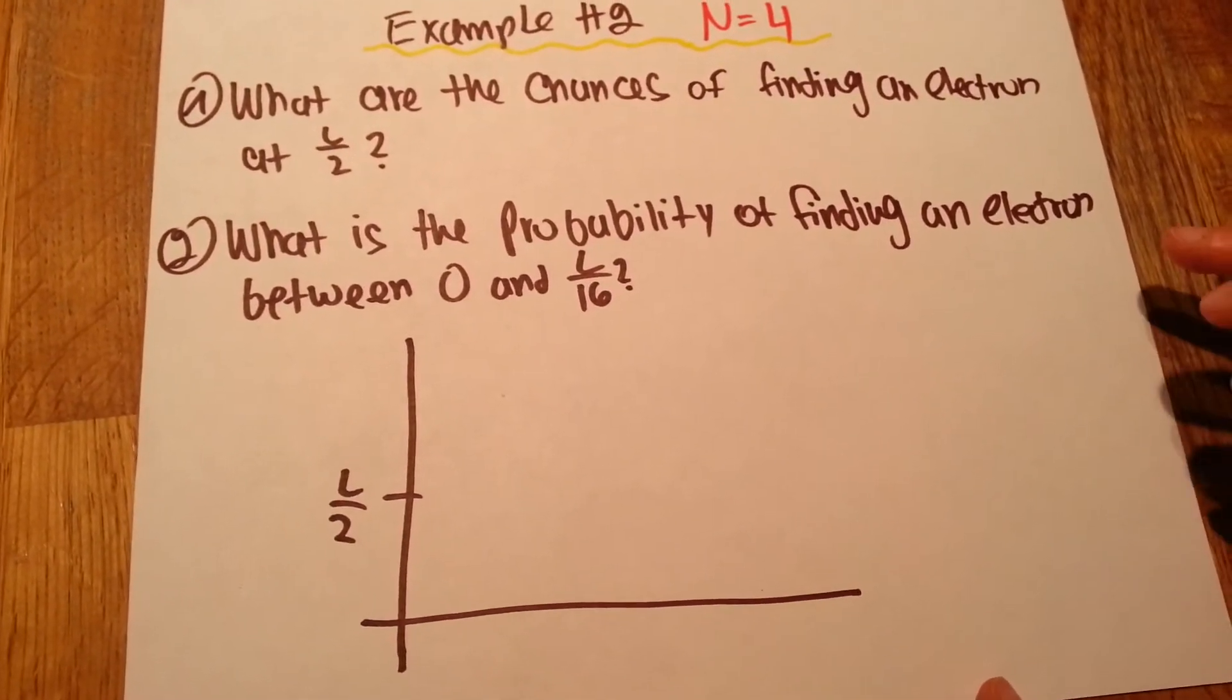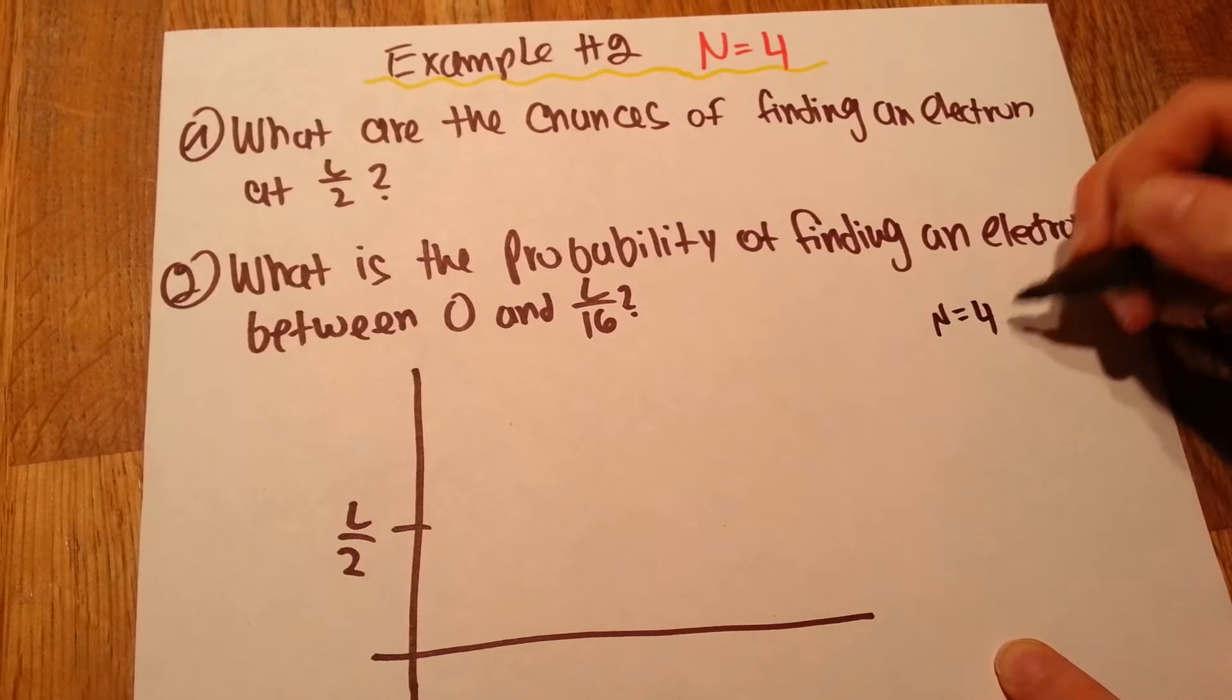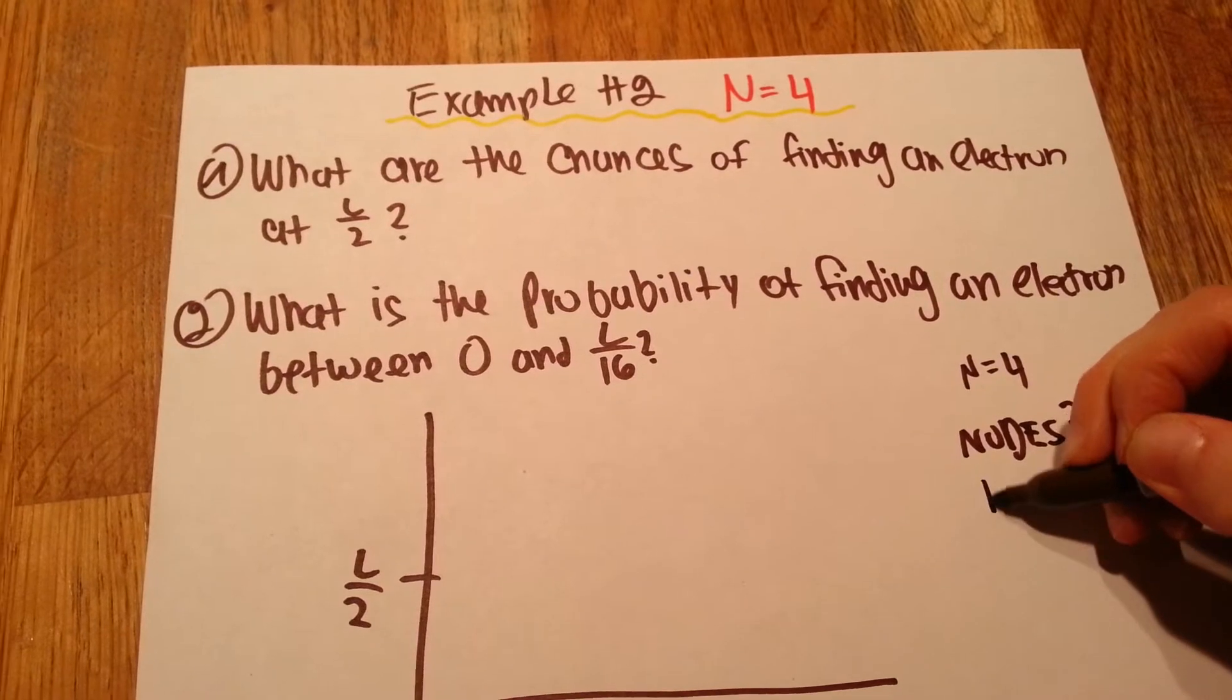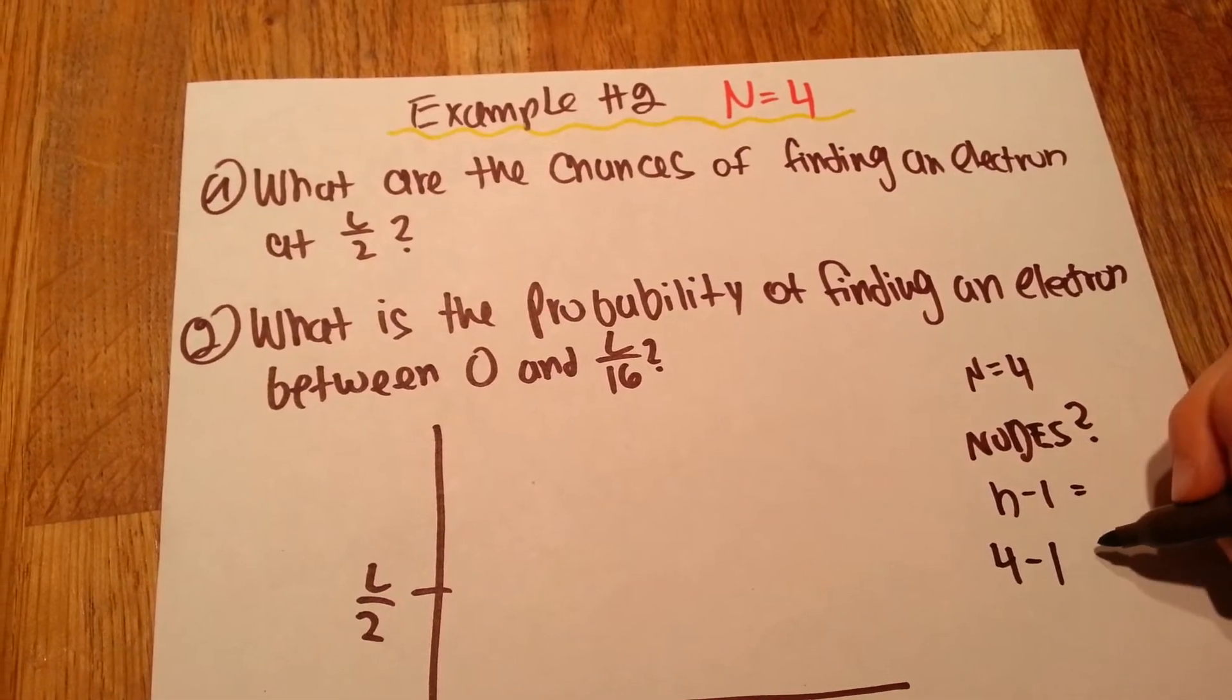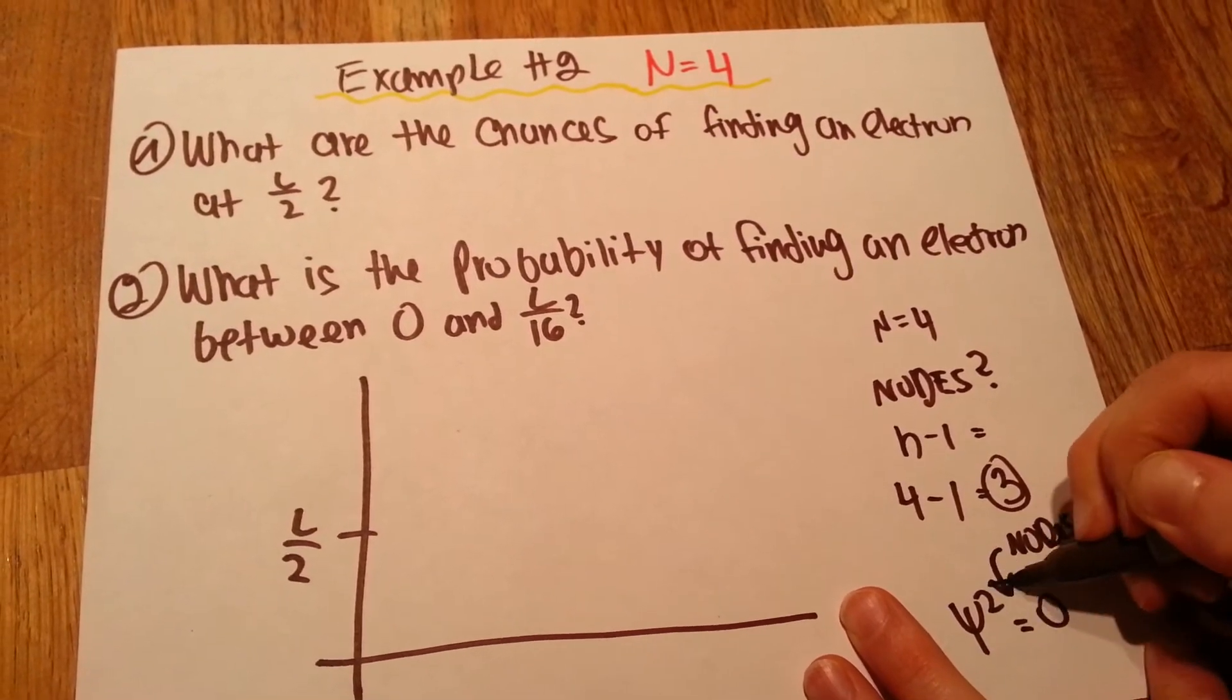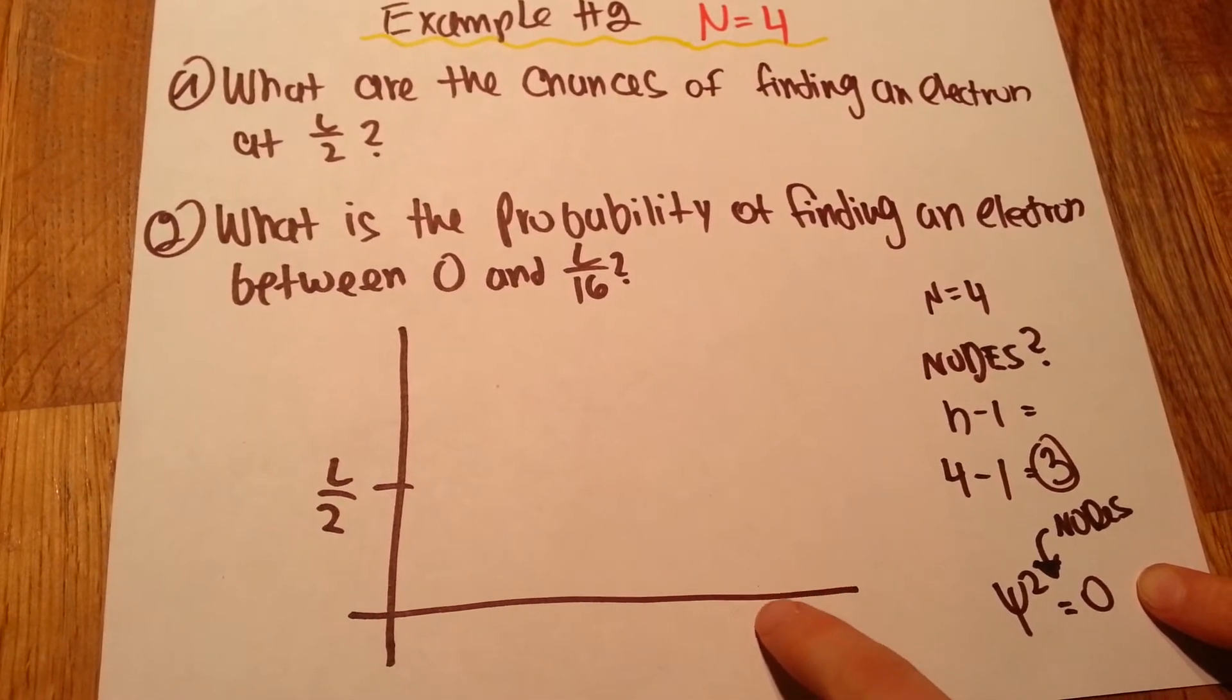So the key to solving this problem is preparing the graph correctly. And the way we're going to do it, we know we have n equals 4. And how many nodes are we going to have? That's a very important info to have. We know that the formula for getting nodes is n minus 1. Our n is 4, therefore 4 minus 1 equals 3. We're going to have 3 nodes. Nodes are where psi squared is 0. This is what nodes are. And nodes are going to be the places where y equals 0, where the graph touches the x-axis.